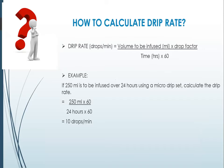How to calculate drip rate? Drip rate in drops per minute is calculated as: volume to be infused (in ml) multiplied by drop factor, divided by time in hours multiplied by 60. For example, if 250 ml is to be infused over 24 hours using a micro drip set, the drip rate is 250 × 60 divided by 24 × 60, which comes out to 10 drops per minute.